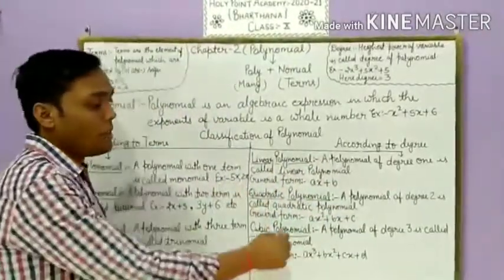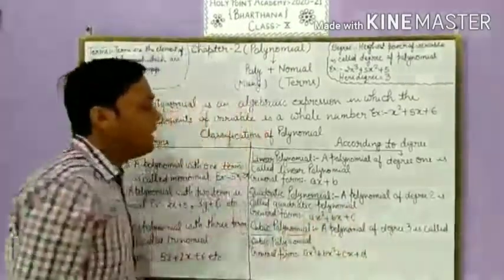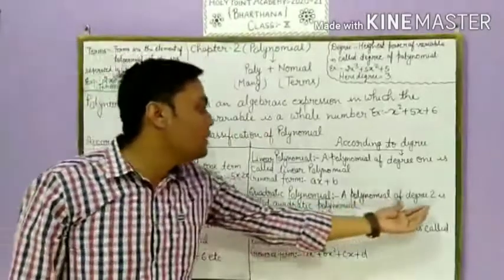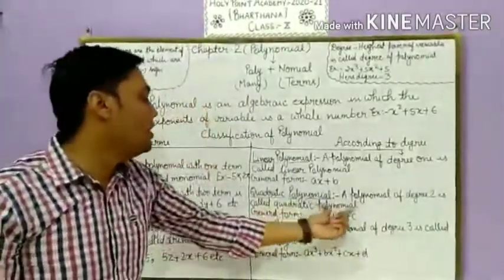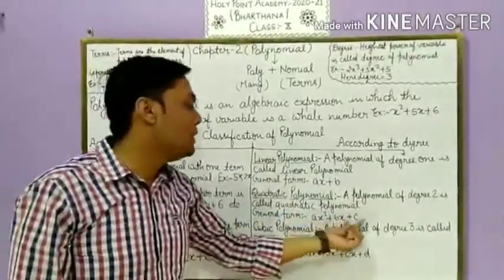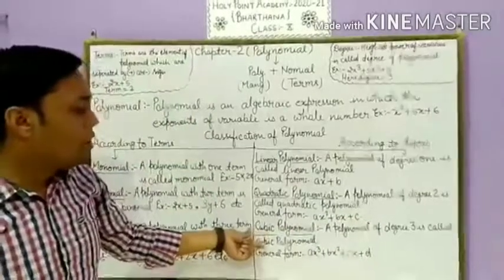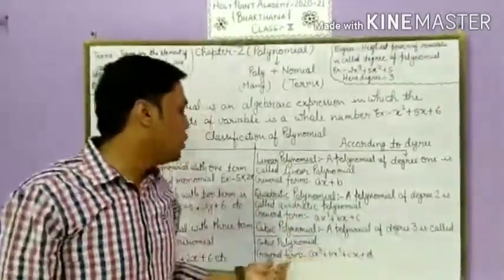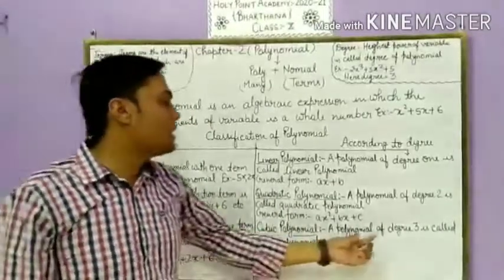A polynomial of degree two is called a quadratic polynomial. The general form of a quadratic polynomial is ax squared plus bx plus c. Next, a polynomial of degree three is called a cubic polynomial.